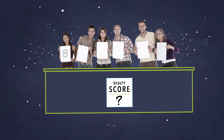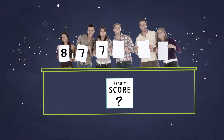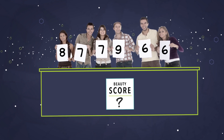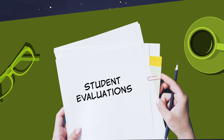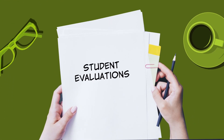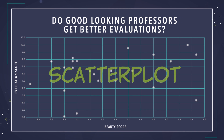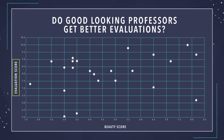You could collect data. First, you could have students rate on a scale from 1 to 10 how good-looking a professor was, which gives you an average beauty score. Then you could retrieve the teacher's teaching evaluations from 25 students. Let's look at these two variables at the same time by using a scatter plot. We'll put beauty on the horizontal axis and teacher evaluations on the vertical axis.